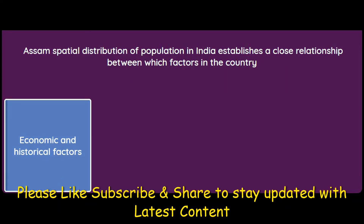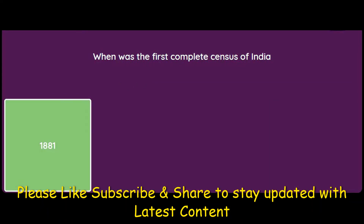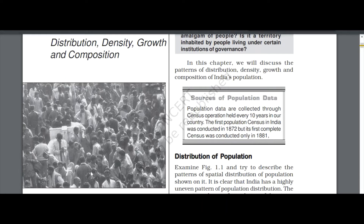When was the first complete census of India held? Options are 1881, 1882, 1880, or 1883. The answer is 1881. According to the book, population data are collected through census operations held every 10 years. The first population census in India was conducted in 1872, but the first complete census was conducted only in 1881.